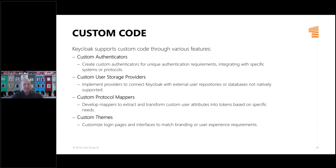Custom protocol mappers allow you to put custom user attributes into tokens based on specific needs. For example, you may want to grant a user an adult or underage role based on their age attribute — that's not supported by default in Keycloak, but you can write your own protocol mapper. And custom themes allow you to create your own login screen with your branding or to match your user experience requirements, so you don't need to use the default Keycloak login screen.